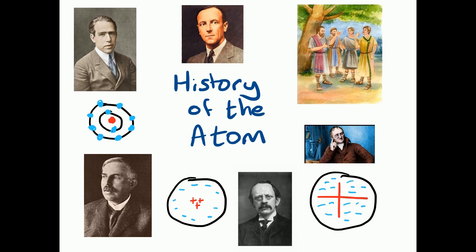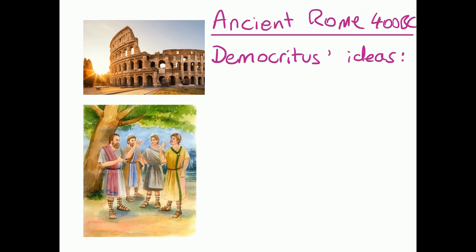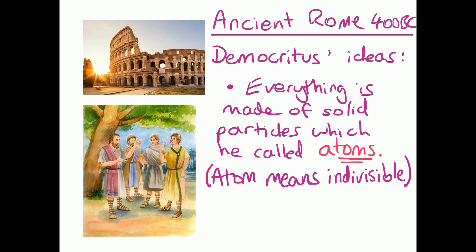The story starts all the way back in ancient Rome in 400 BC, and a philosopher called Democritus had ideas that everything is made up of solid particles which he called atoms. So he was the one to come up with the word atom, and in those times atom meant indivisible. In other words, you couldn't divide it into smaller pieces. And we now know that's not true because we know that atoms have got subatomic particles like protons, neutrons, and electrons. So his ideas about atoms would have looked like this: solid spheres with nothing else inside them.